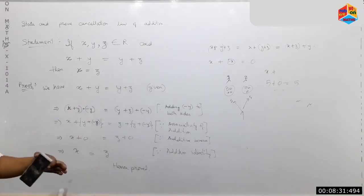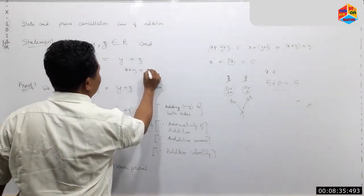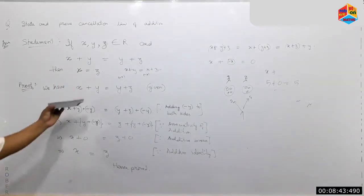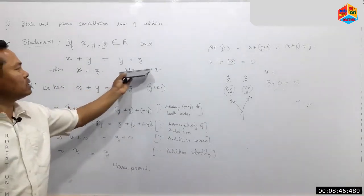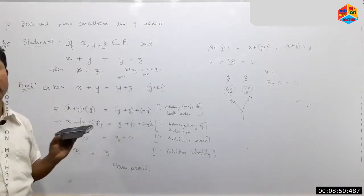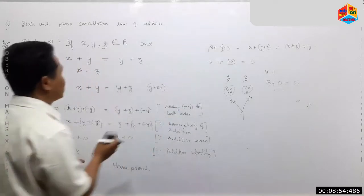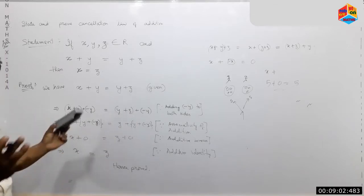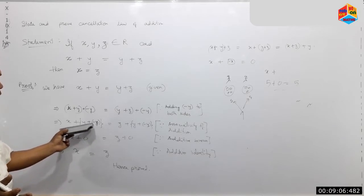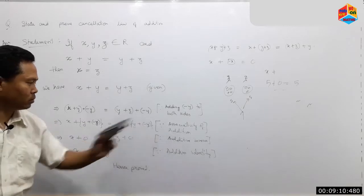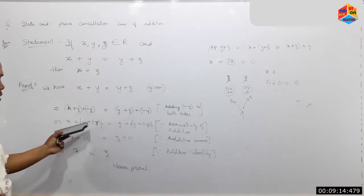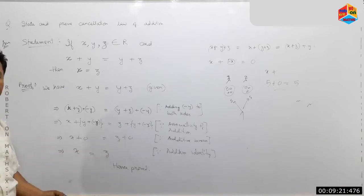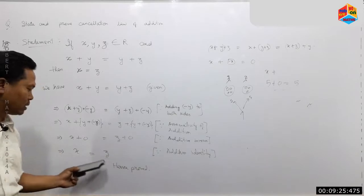We use x plus y equals x plus z. Going through the steps — applying associativity, then additive inverse to get zero, and then additive identity — we conclude that y is equal to z. Therefore the cancellation law of addition is proven.